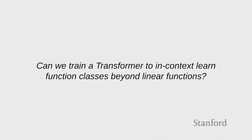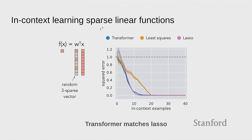So what about going beyond linear function classes? Let's look at sparse functions. In a sparse function, the weight vector has zeros in a lot of places — maybe only three non-zero entries. Here the optimal thing is not least squares. Least squares is going to take 20 examples to figure out what the solution is. The optimal algorithm is Lasso, which does L1 regularization. And here we show that the transformer actually learns to behave like the Lasso. This is pretty cool because the Lasso is not a trivial algorithm and exploiting sparsity is non-trivial.